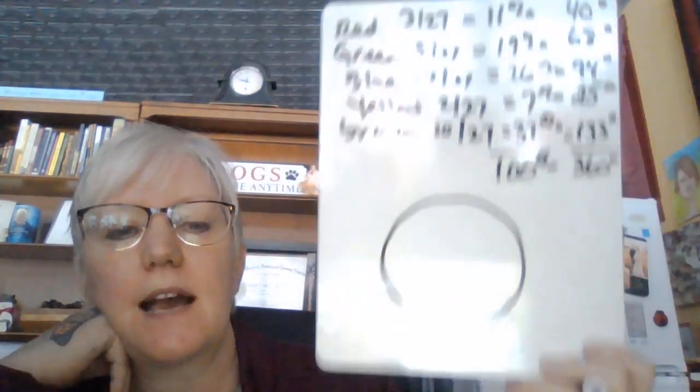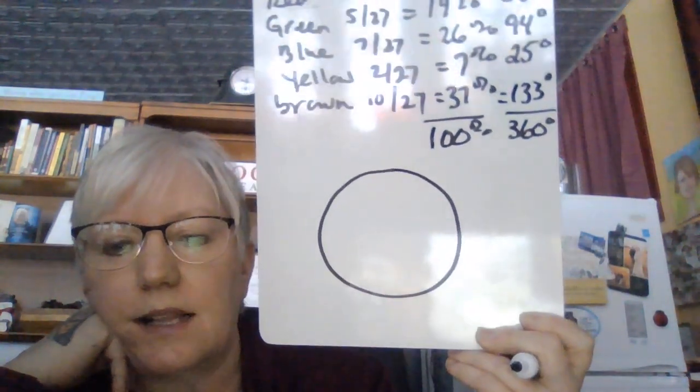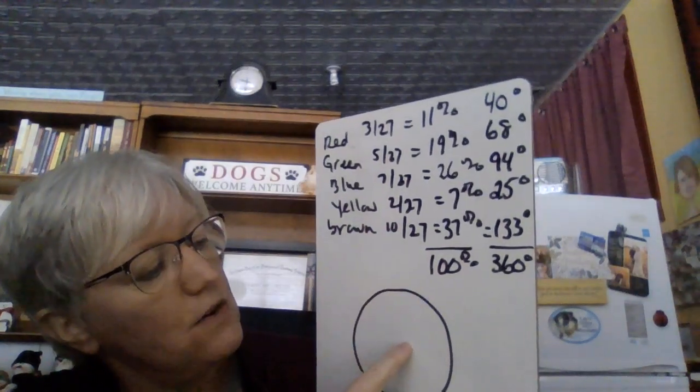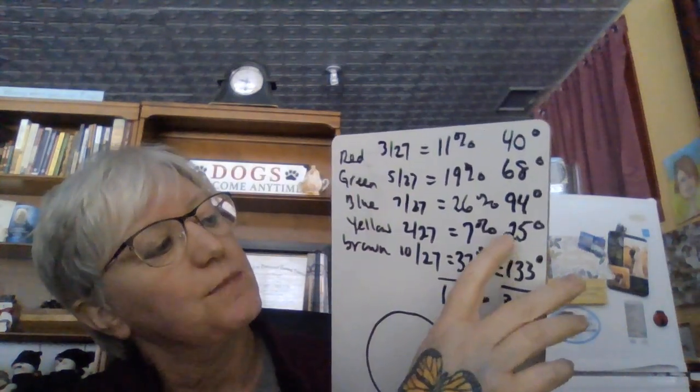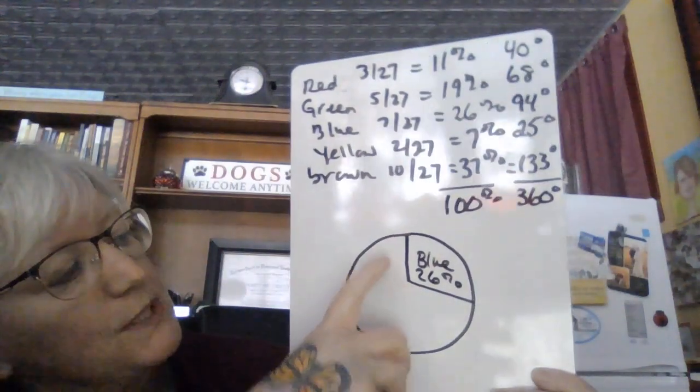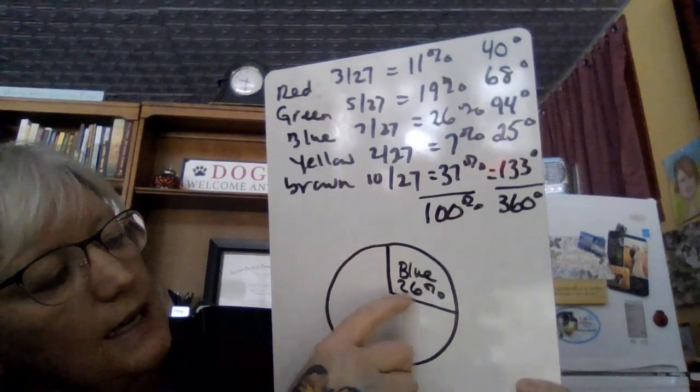Then we draw a circle. In a face-to-face class we'd use protractors and compasses to measure exactly, but we're just going to estimate here. Knowing that a 90-degree angle is a perfect right corner, I'm going to start with blue and estimate it a little bit more than 90 degrees. When we label, we always put the percentage — blue is 26%. If it were a perfect right angle it would be 90 degrees, so I made it slightly bigger.